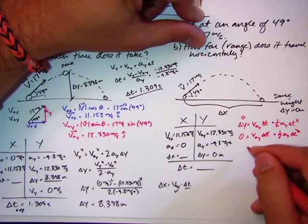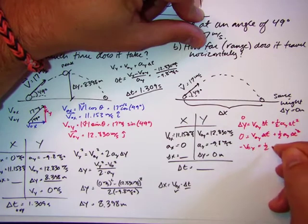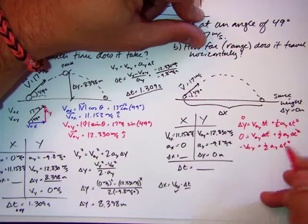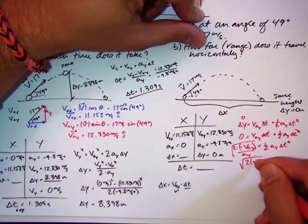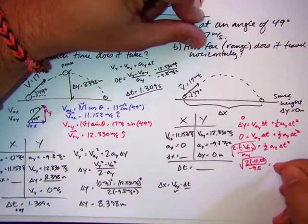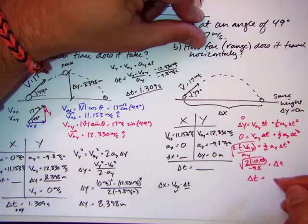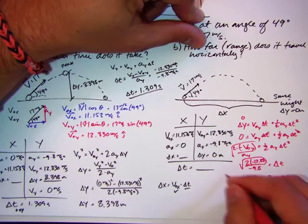So I get minus v not y equals 1 half ay delta t squared. Let's multiply by 2 and then divide by ay. And I'm going to square root it. So if I do all that jazz, square root of 2 times minus 12.83 over minus 9.8. I'm cutting some corners here because I don't want this video to be forever. Should get a delta t of 2.618 seconds, which goes here.